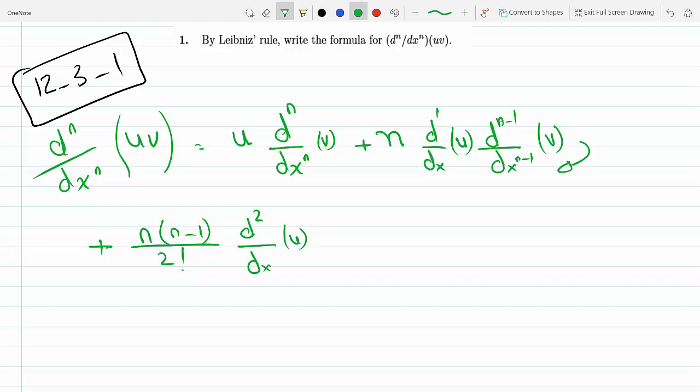And the v derivative goes down by 1, so this becomes (n-2) with respect to x of v. Again, the sum of the derivatives is n, and I keep on building this scenario.